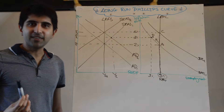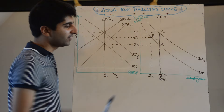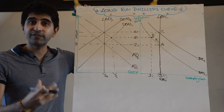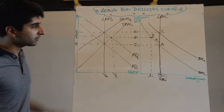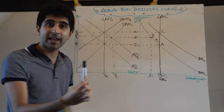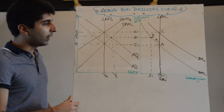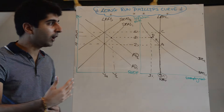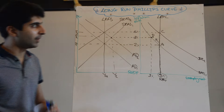The long-run Phillips Curve tells us pretty much exactly the same as what the long-run aggregate supply curve tells us — output at the natural rate of unemployment, where all factors of production are being used to the maximum amount but at sustainable levels. The long-run Phillips Curve says that the economy will always return back to the natural rate of unemployment. You can have short-run deviations when we move up or down the Phillips Curve, or when the short-run Phillips Curve shifts left and right, but in the long run we will always return to the long-run Phillips Curve.